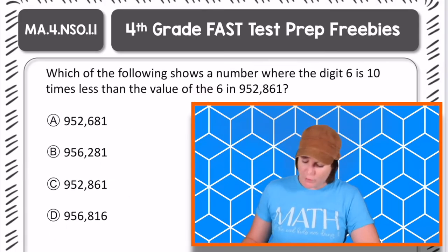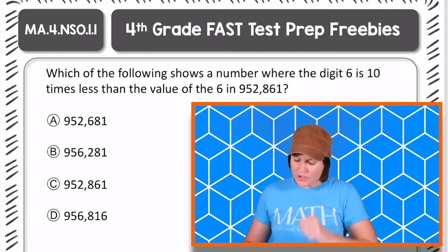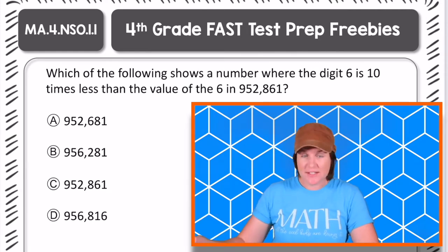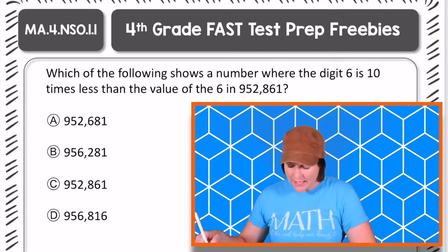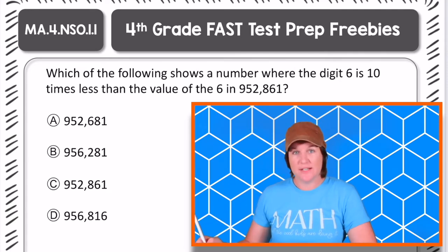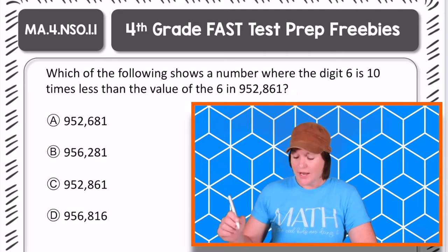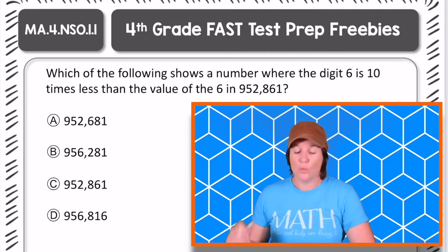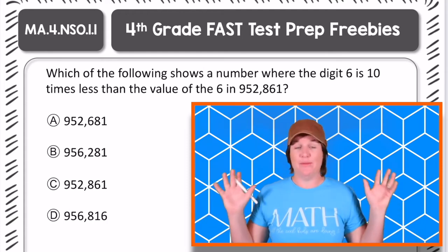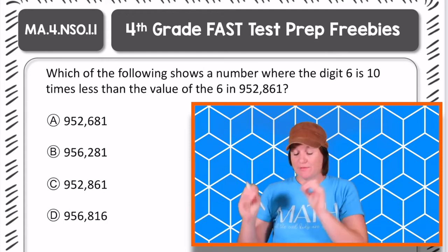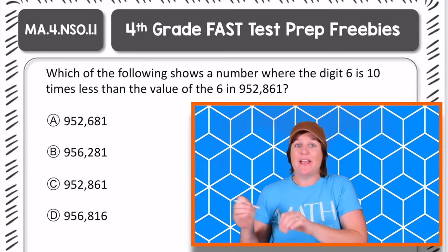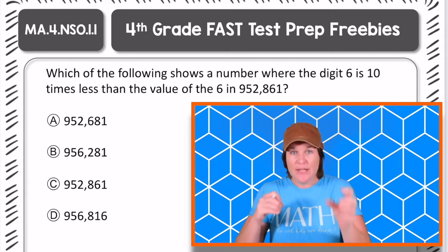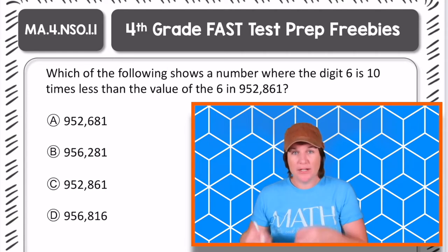Alright, everybody, here is our 4th grade problem for today, and it says, Which of the following shows a number where the digit 6 is 10 times less than the value of the 6 in the number 952,861? That was a lot for my brain. That was the first read. I'm definitely going to take a closer look at this problem and not just jump in, but I'm going to take a closer look and annotate the text to mark it up and break it down.